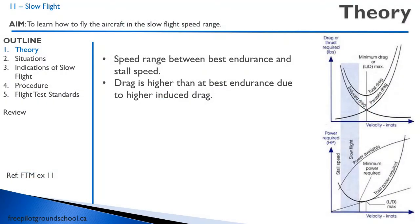Let's begin with some theory. As we learned in our last lesson, we have a couple of drag curves. First off, we have parasite drag. Remember from your ground school that parasite drag is caused by the shape of the aircraft going through the air. It's an exponential function — as we increase speed, the parasite drag increases.